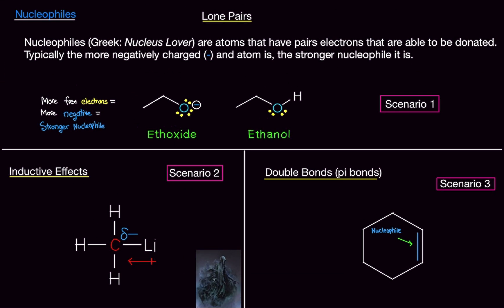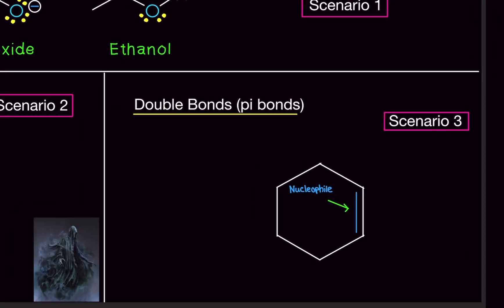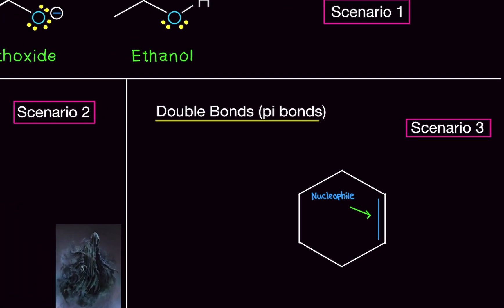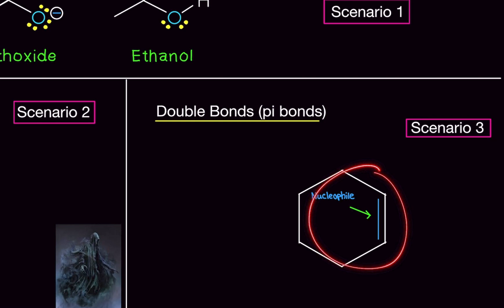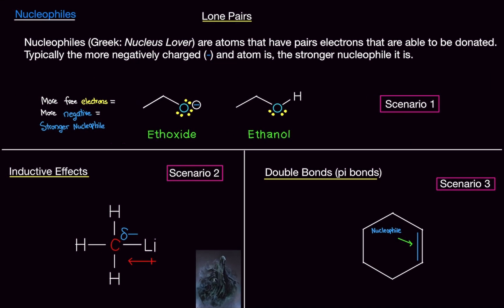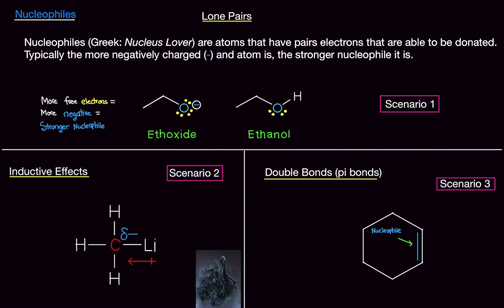The third method is double bonds, also known as pi bonds. Whenever you see a double bond, it can act as a nucleophile and will do attacking. This will come into play later in organic chemistry.